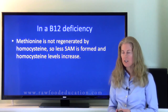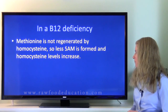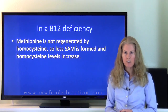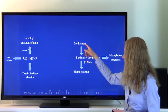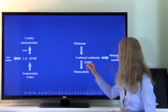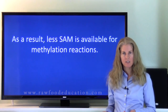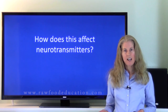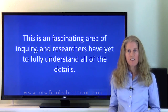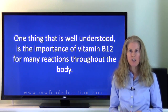In a vitamin B12 deficiency, methionine is not regenerated by homocysteine. So less SAM is formed and homocysteine levels tend to increase. When we take vitamin B12 out of the equation, we no longer have methionine being regenerated from homocysteine, so we end up with less SAM and less methyl groups available for those important methylation reactions. How a vitamin B12 deficiency affects our neurotransmitters, our DNA, or our cell membranes is a fascinating area of inquiry, and we have yet to understand all the details. But one thing that is very well understood is that vitamin B12 is very important for a variety of reactions throughout our body.